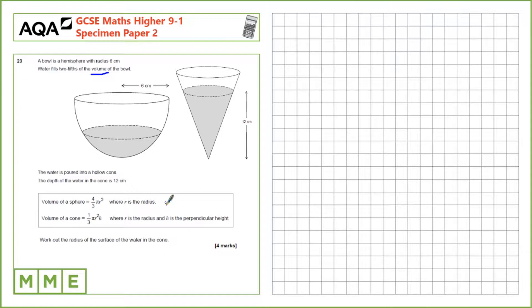Work out the radius of the surface of the water in the cone, so we need to figure out this length here, and we'll call that x. In order to work this out, we need to know the volume of water that was poured into this cone in the first place, so we need to calculate the volume of water in the hemisphere.